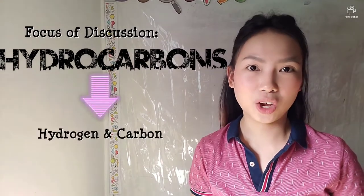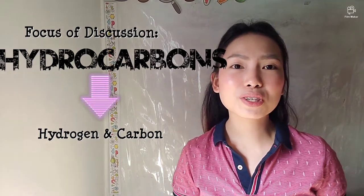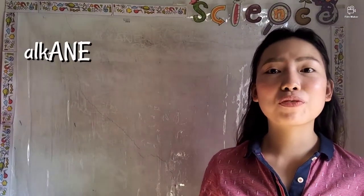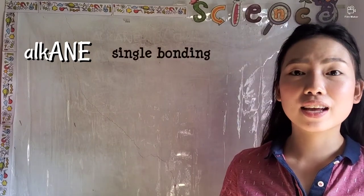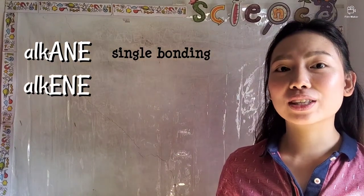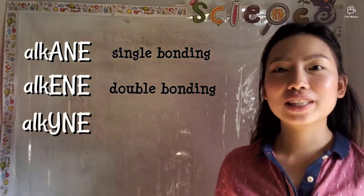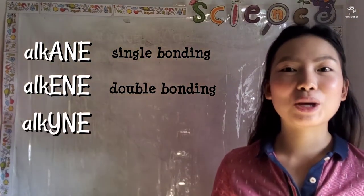Continuing about the functional groups in organic compounds, this video will focus on hydrocarbons. Hydrocarbons contain only hydrogen and carbon, and they have 6 main groups. Let us first focus on alkanes, which contain only single bonding. Alkenes contain double bonding, and alkynes contain triple bonding.